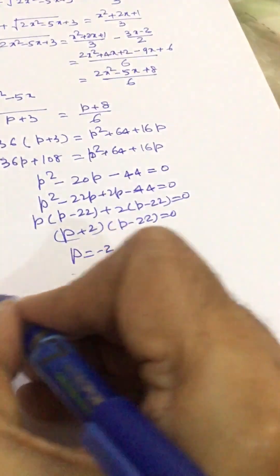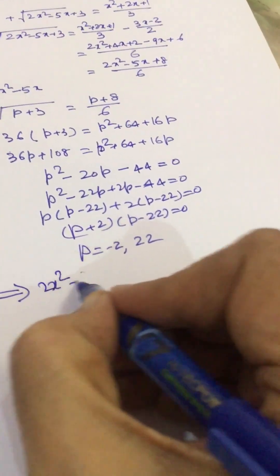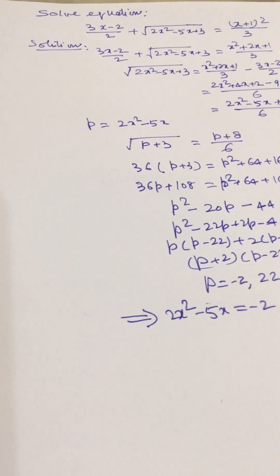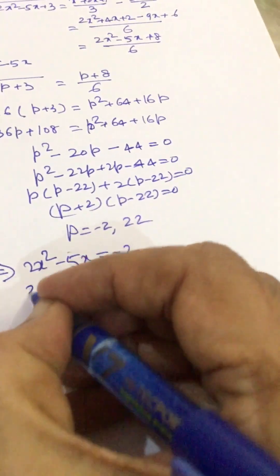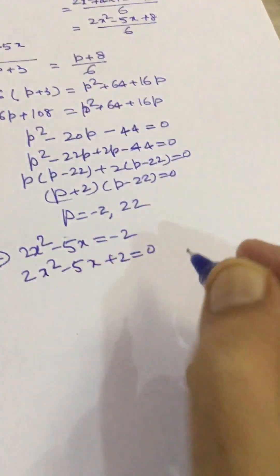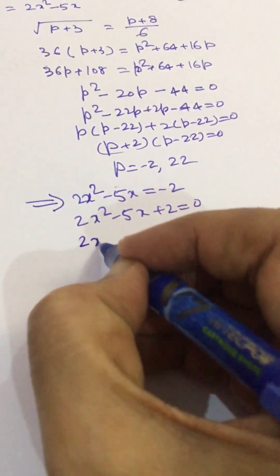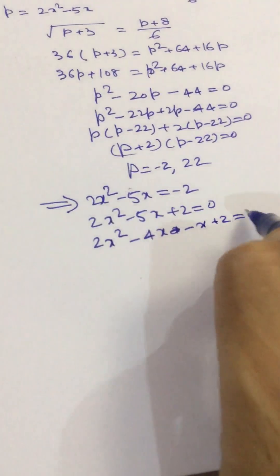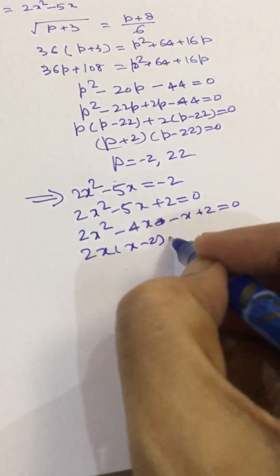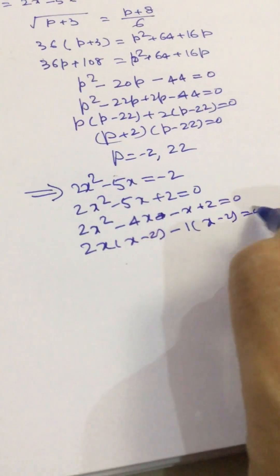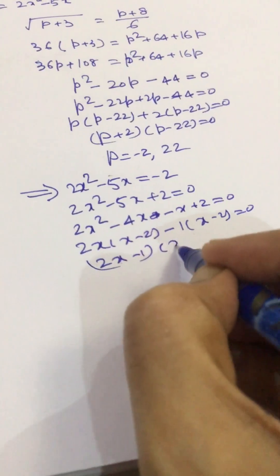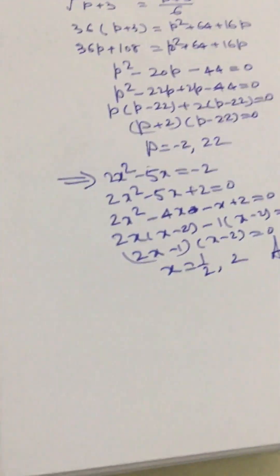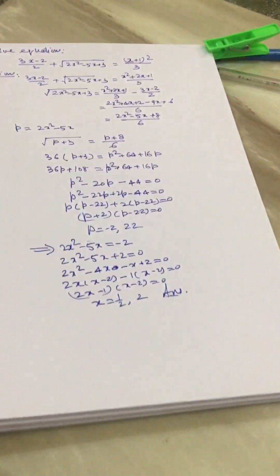Hence, we can write 2x squared minus 5x equal to minus 2, or 2x squared minus 5x plus 2 equal to 0. This we can write as 2x squared minus 4x minus x plus 2 equal to 0, and this gives us one set of answers.